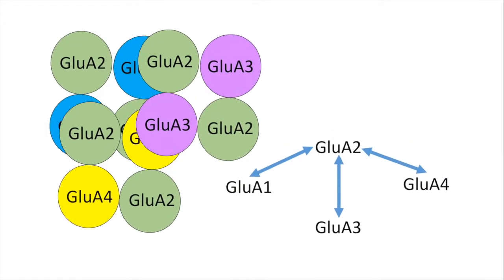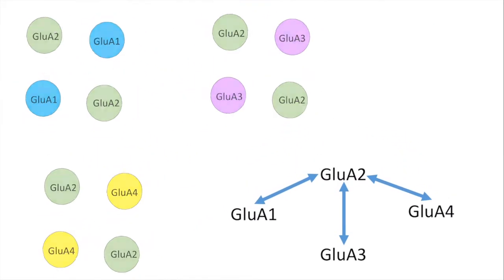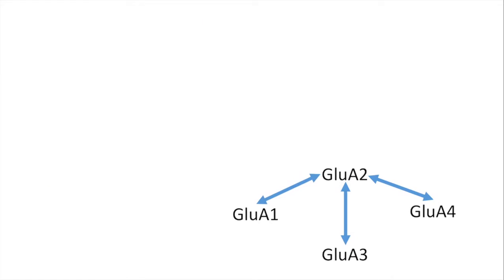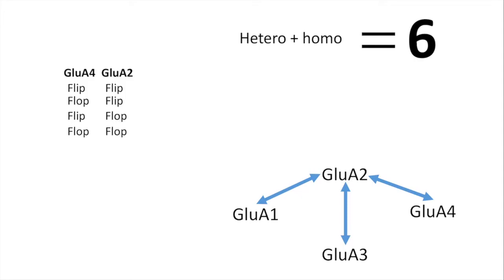Why is this important? I briefly mentioned that AMPA receptors are made out of four genes. Hetero and homo tetramer gives you six variations of AMPA receptors. If we add flip-flop variation, we get 18 variations. That's a lot of variations.